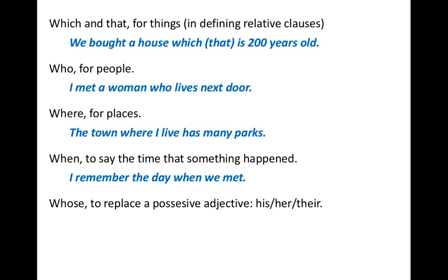Let's see an example with when: 'I remember the day when we met.' Separating this sentence into two clauses: 'I remember the day' and 'we met one day.' We use when to replace 'the day' in the relative clause. This is a defining relative clause of the second type because in this case the relative pronoun is optional — 'I remember the day we met.'